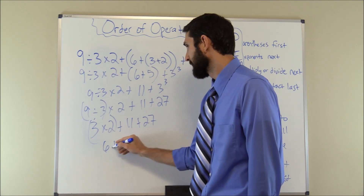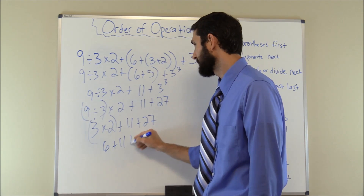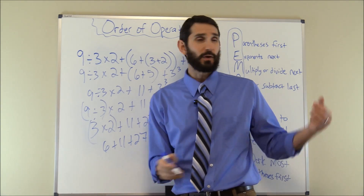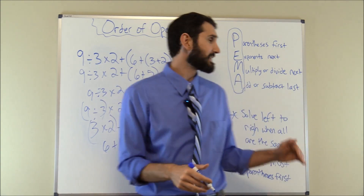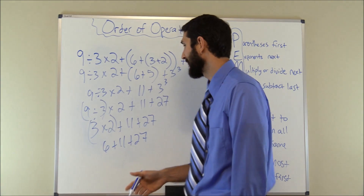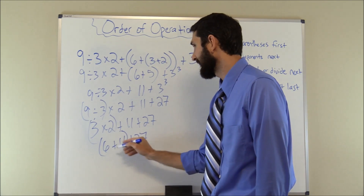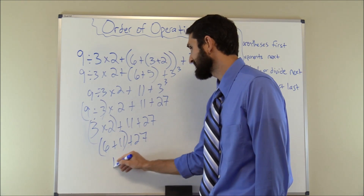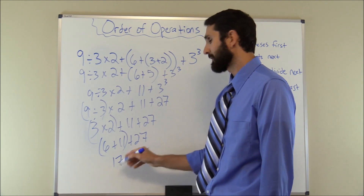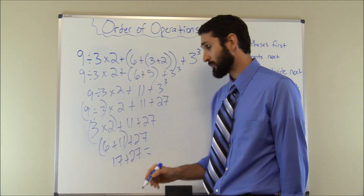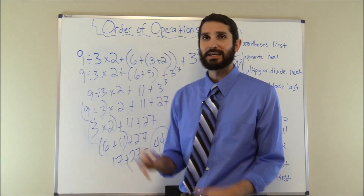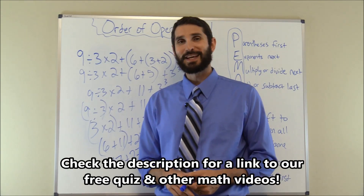We solve 3 × 2 = 6, giving us 6 + 11 + 27. Now we have all addition, so we work left to right: 6 + 11 = 17; 17 + 27 = 44. So 44 is the answer to this problem.